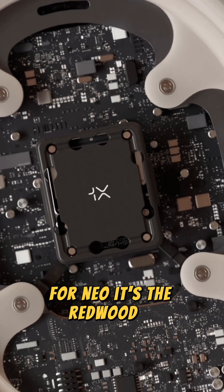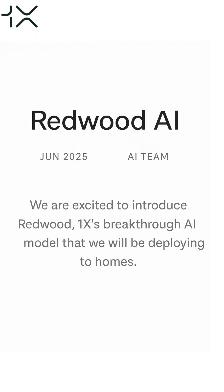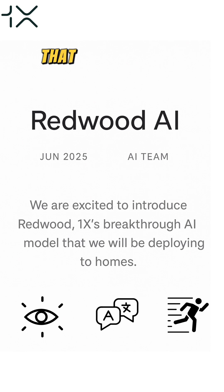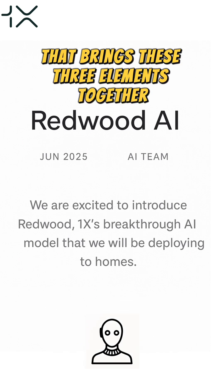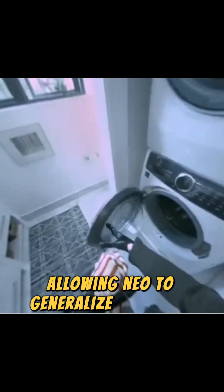For Neo, it's the Redwood AI. Redwood AI is a vision, language, and action model that brings these three elements together, allowing Neo to generalize cognitive actions.